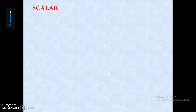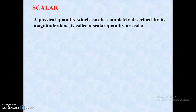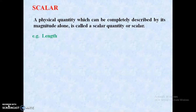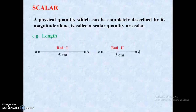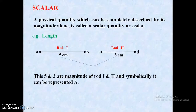First, scalar. Scalar is defined as a physical quantity which can be completely described by its magnitude alone. It is called a scalar quantity or scalar. For example, length. The length of rod one is 5 cm and the length of rod two is 3 cm. The values 5 and 3 are called the magnitude of the rod. Symbolically, it is represented by the symbol A, called a scalar.